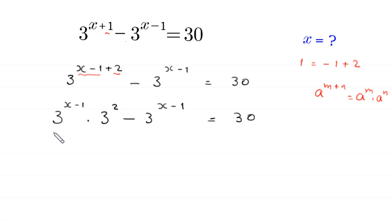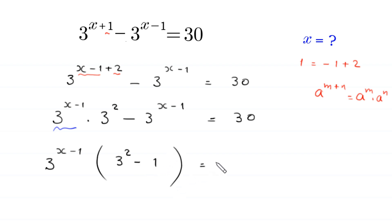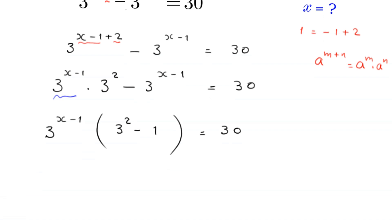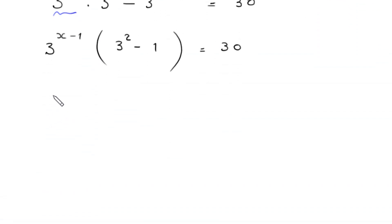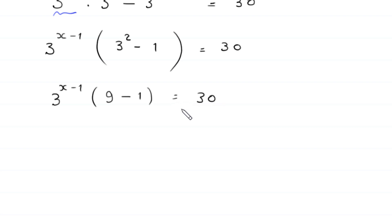Now we can factor out 3 to the power x minus 1 from this expression. So, 3 to the power x minus 1 times the quantity 3 squared minus 1 — which is 9 minus 1 — equals 30. That gives us 3 to the power x minus 1 times 8 is equal to 30.